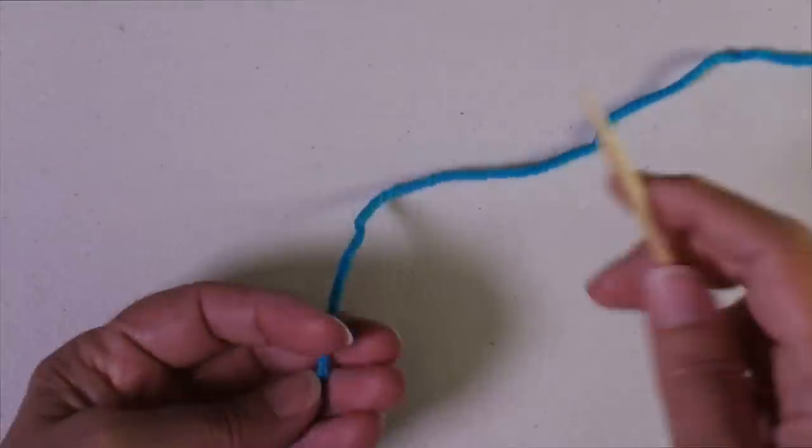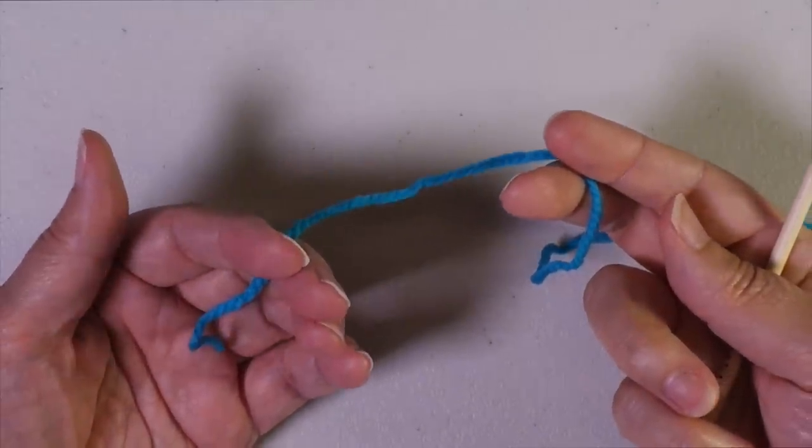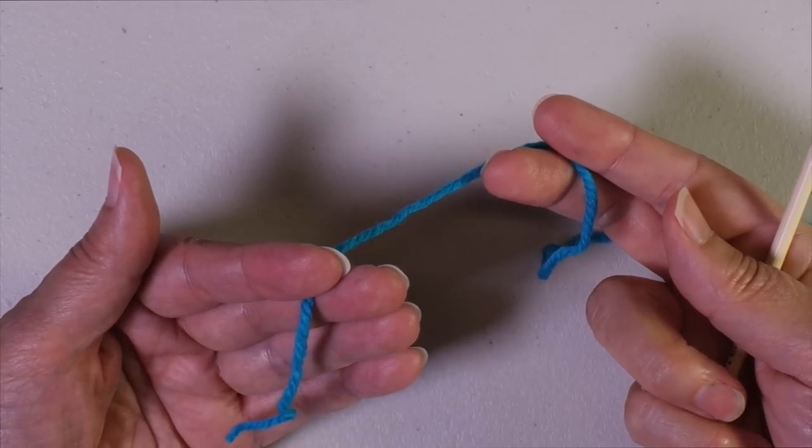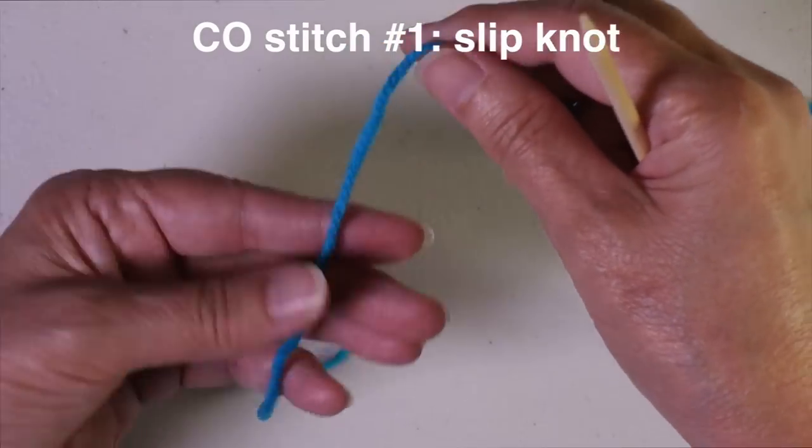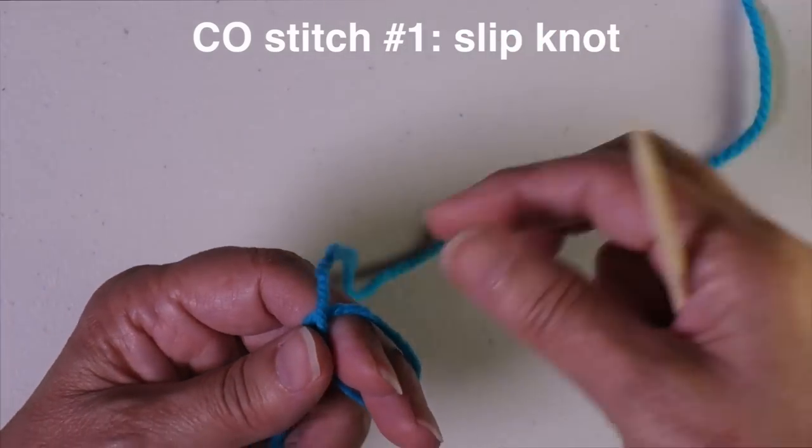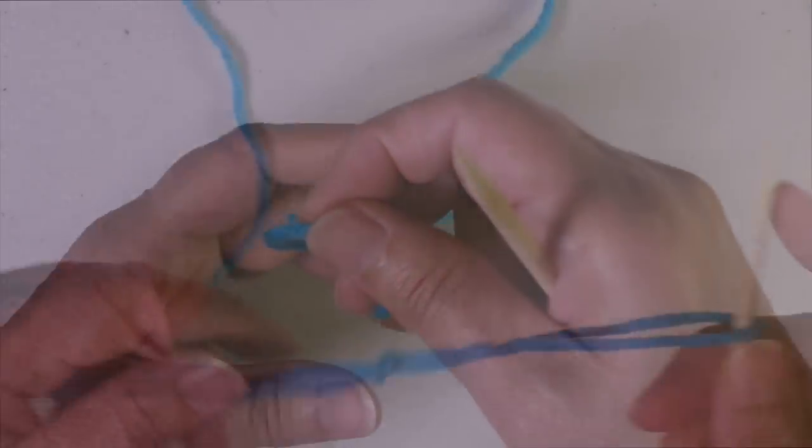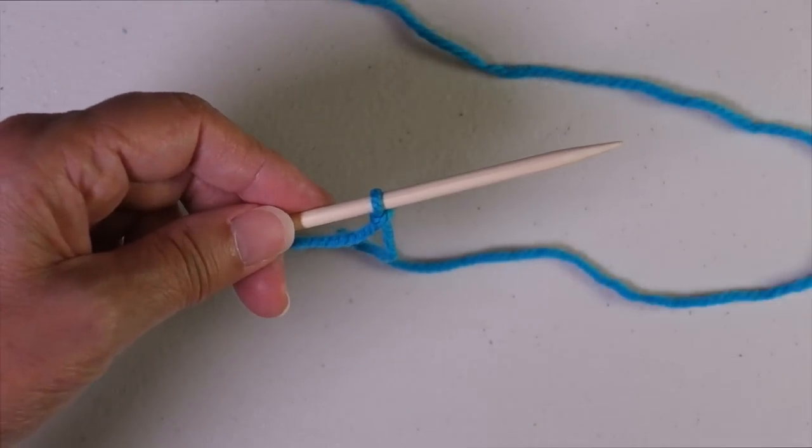So what we're going to do is we're going to cast-on for the cable cast-on like we would for any cable cast-on, but we're going to cast-on three extra stitches. So with the cable cast-on, you start with a slipknot. And you put the slipknot on the needle. So that is your first cast-on stitch.